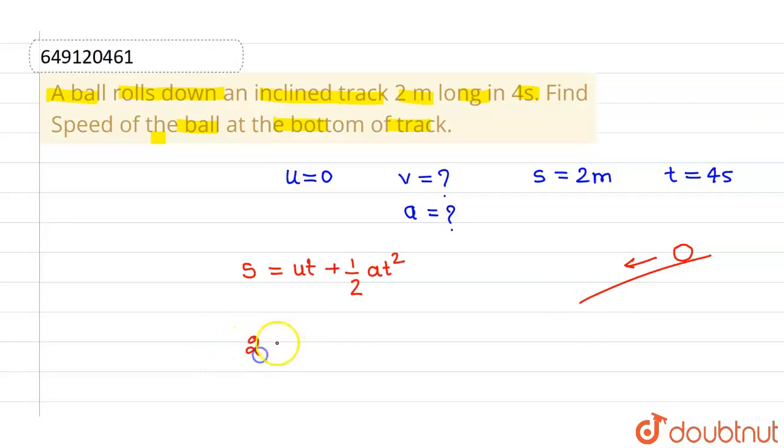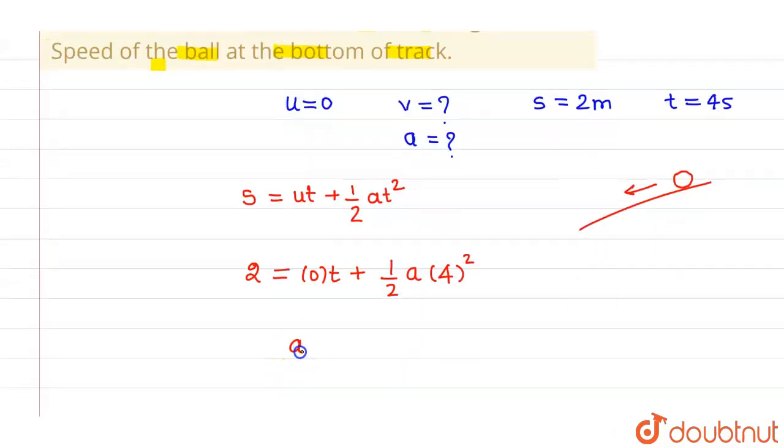The displacement is 2 meters. Its initial velocity is 0 plus half into acceleration we need to find out, and time taken is 4 seconds. From here, the acceleration is 2 × 2 divided by 16. This 2 and this 16 will cancel out 8 times, so the acceleration is 1/4 meter per second squared.